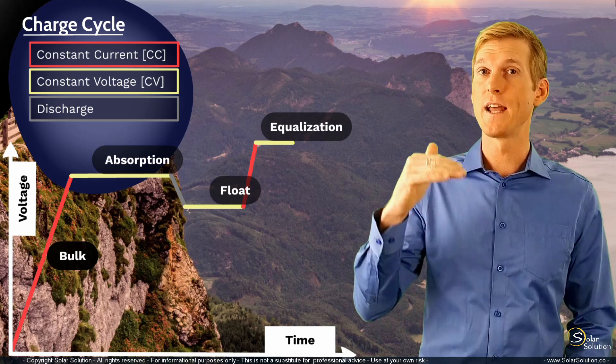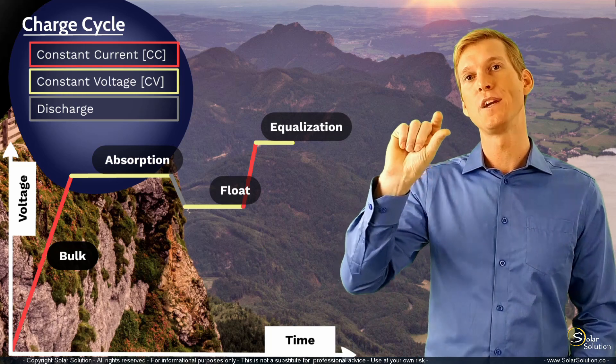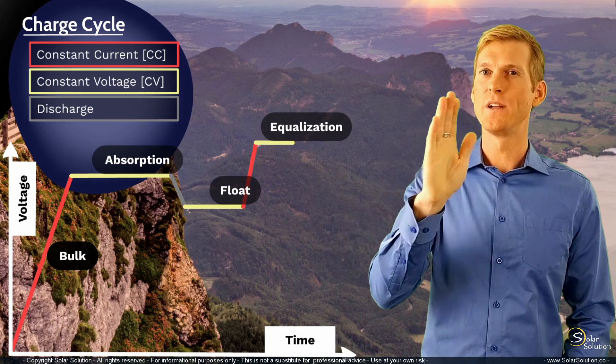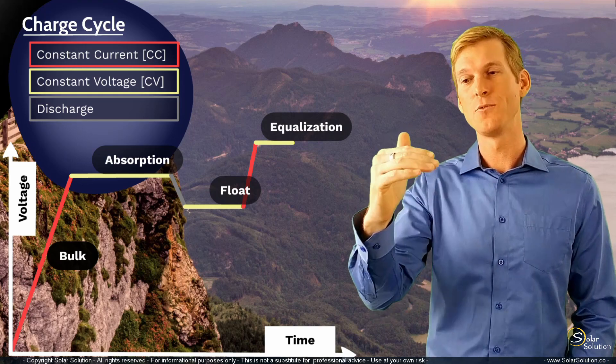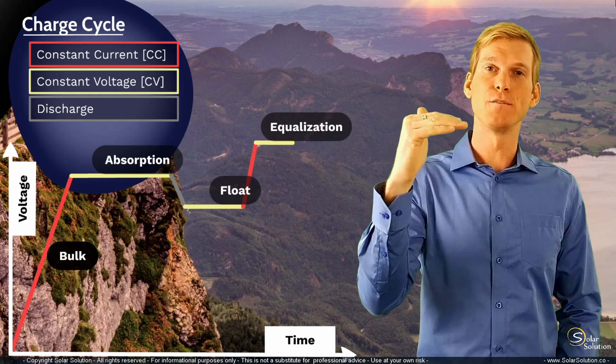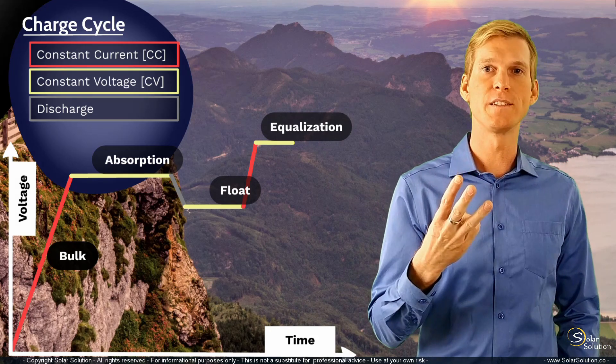Then once you have reached this elevated voltage, so the equalization voltage, the charger will change its behavior, the same as when it changes from bulk towards absorption. So it changes from the red towards the yellow line, it will now maintain the equalization voltage for a set amount of time.